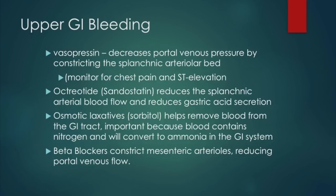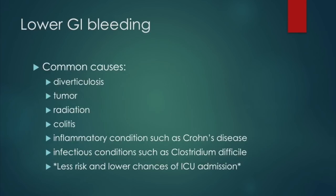Beta blockers help constrict mesenteric arterioles, reducing portal venous flow and bleeding. Lower GI bleeding common causes include diverticulosis, tumor, radiation, colitis, inflammatory conditions such as Crohn's disease, and infectious conditions such as Clostridium difficile. Lower GI bleeding is associated with less mortality than upper GI bleeding and is less common, so there are lower chances of ICU admission with a lower GI bleed.